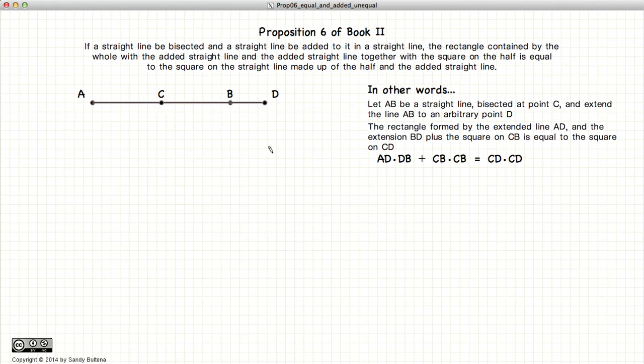If we look at this algebraically, which is a little easier, this proposition states that AD times DB, so AD which is 2X plus Y, multiplied by DB which is Y, plus the square of CB which is X squared, will be equal to the square of CD which is X plus Y all squared. So this is what we're trying to demonstrate, only using geometry of course.